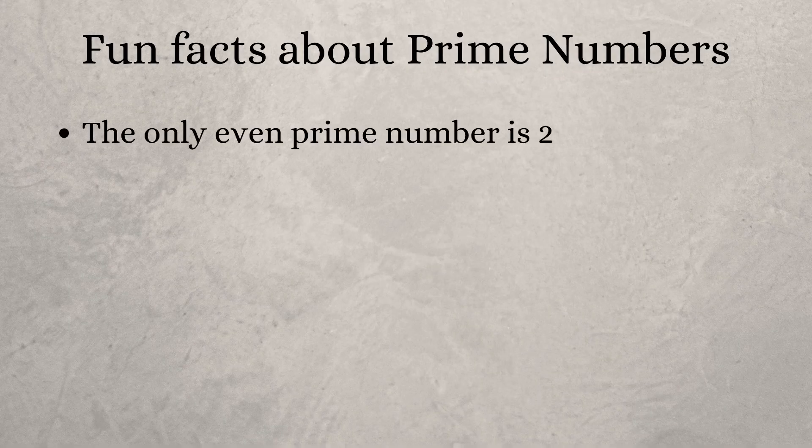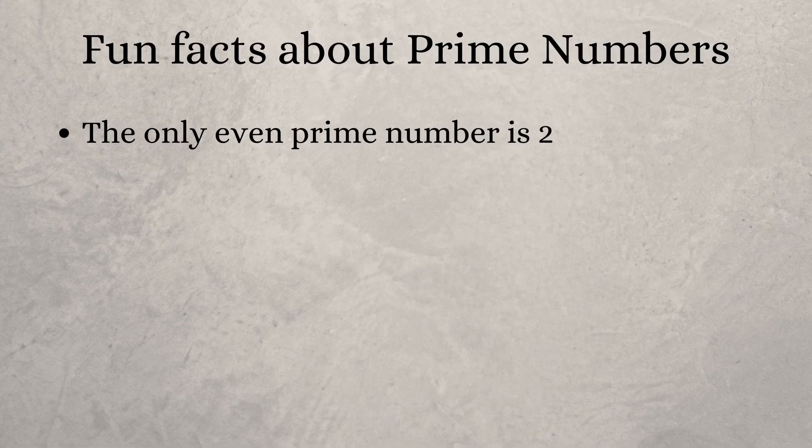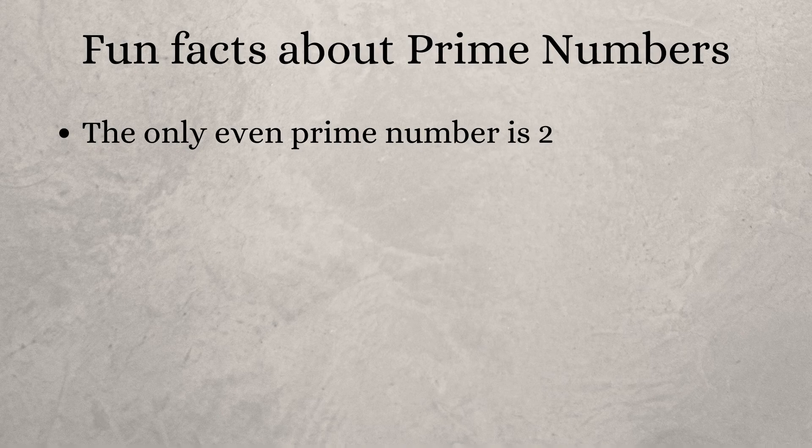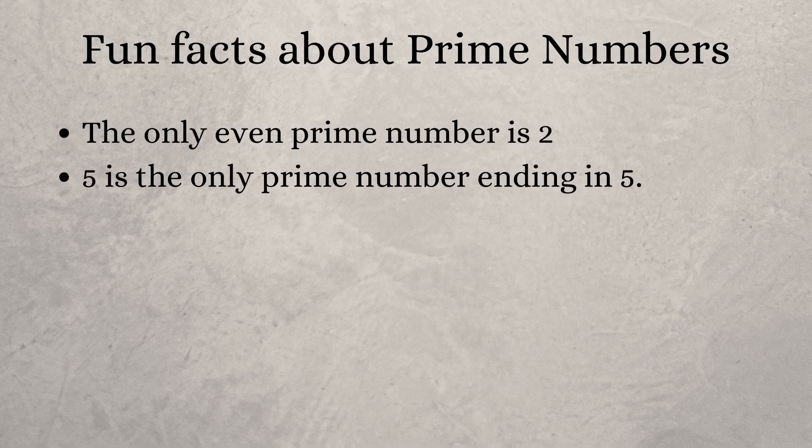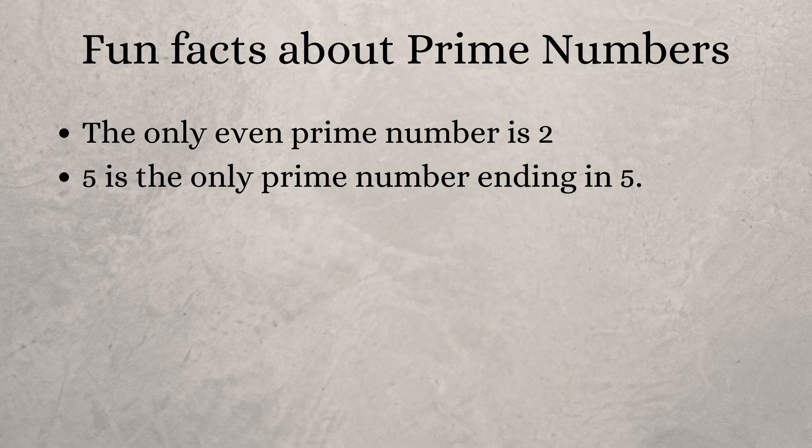Two is the only even prime number, which means all the other prime numbers are odd numbers. Similarly, five is the only prime number that ends in a five.